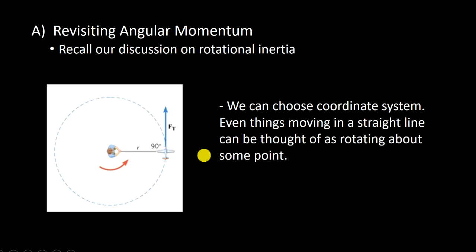So you can look at something that's clearly moving in circular motion as something that's rotating. The same is true for things that are moving in straight lines. Weirdly enough, you could approach it as something that's rotating.